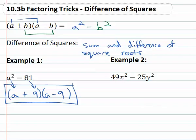If we can take the square root of both, it's the sum and difference of the square roots. We can check this by multiplying it out. A times a is a squared. We know that the outside and inside are going to subtract to 0, and 9 times negative 9 is negative 81. It matches the original problem.